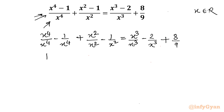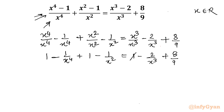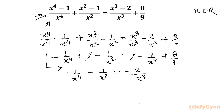Now we have 1 minus 1 over x⁴ plus 1 over x², equal to 1 minus 2 over x³ plus 8 over 9. We can cancel the 1 on both sides. Taking that 1 to the right, we are left with minus 1 over x⁴ minus 1 over x² on the left. On the right we have minus 2 over x³ plus 8 over 9 minus 1, which simplifies to minus 1 over 9.